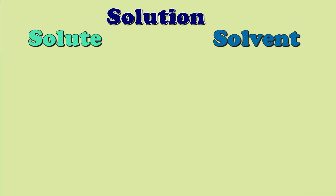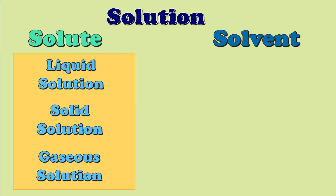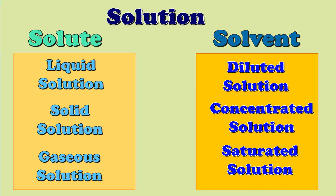You've learned about solution, which is a homogeneous mixture. To form a solution, we need a solute and a solvent. A solution can be classified according to its final phase — liquid solution, solid solution, or gaseous solution — and also according to the amount of solute and solvent it contains: diluted, concentrated, or saturated solution.